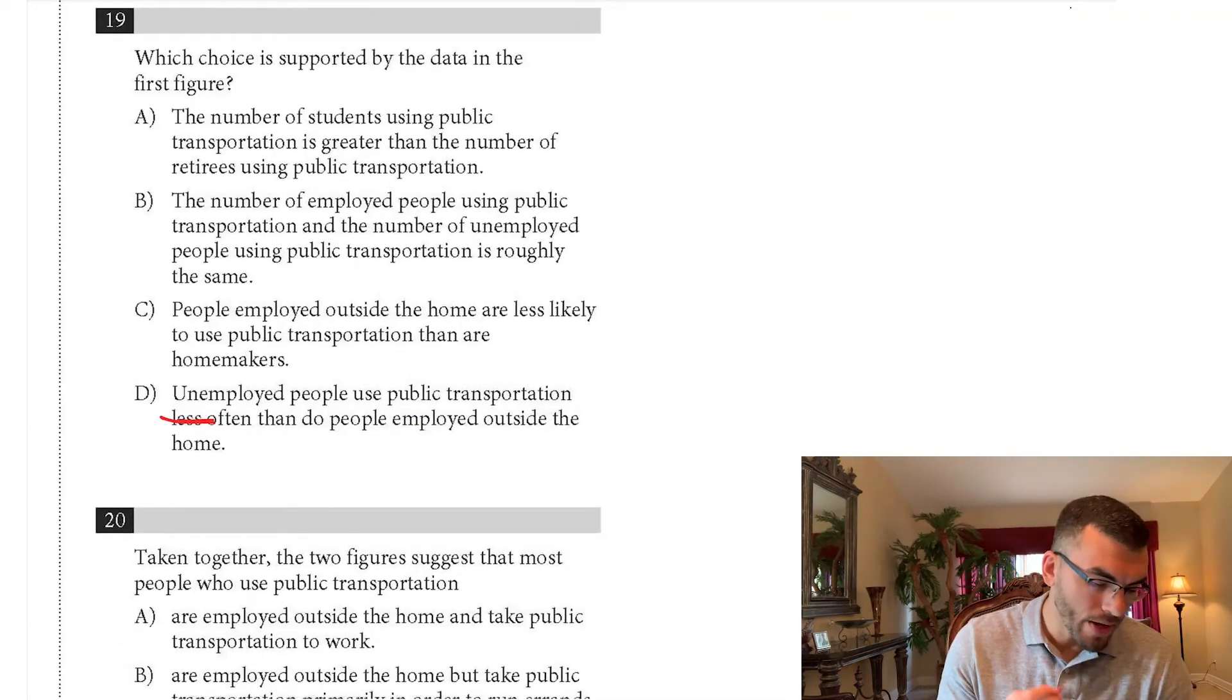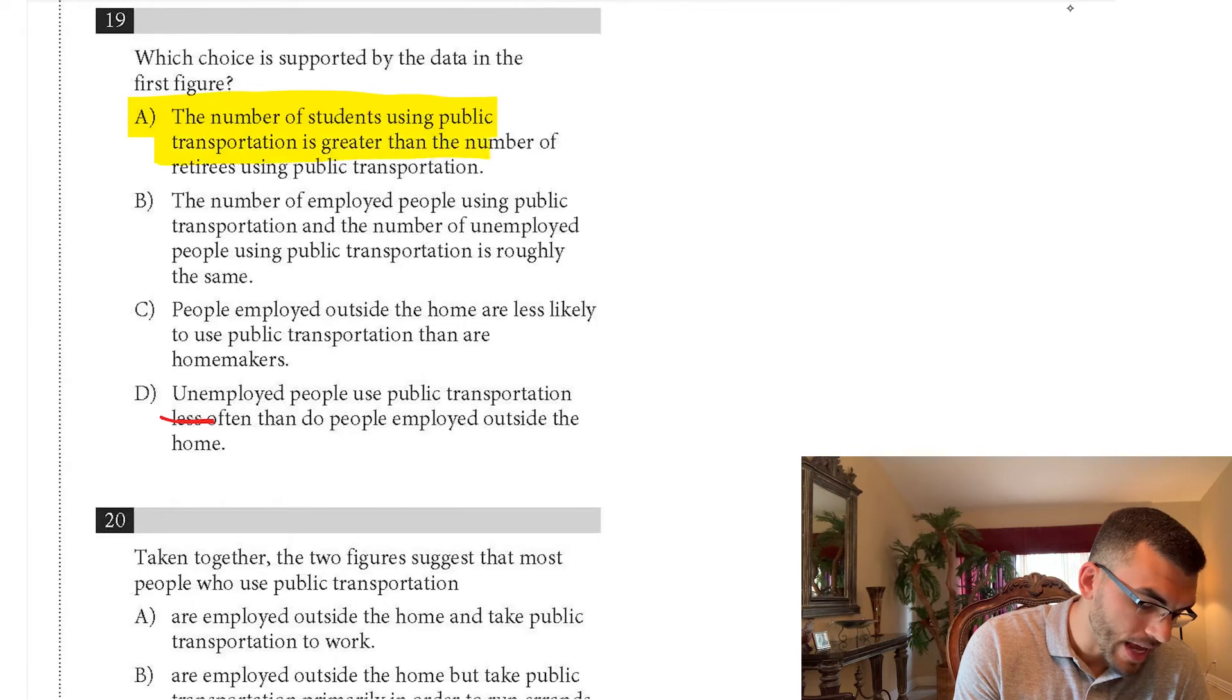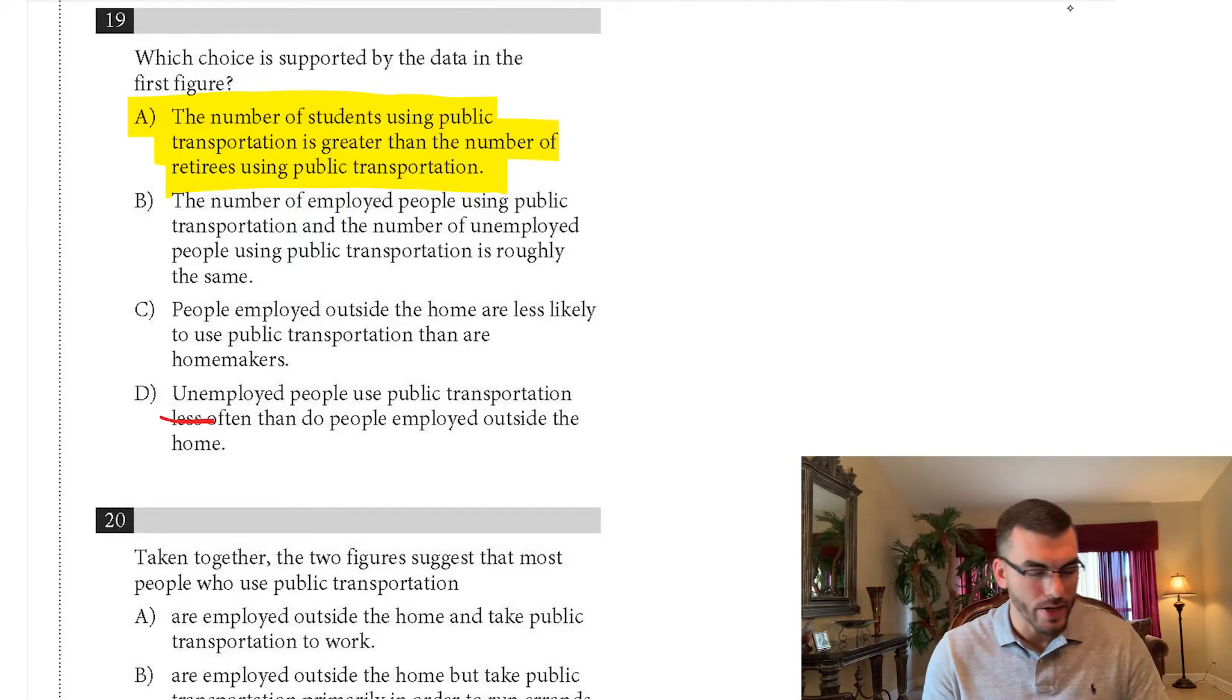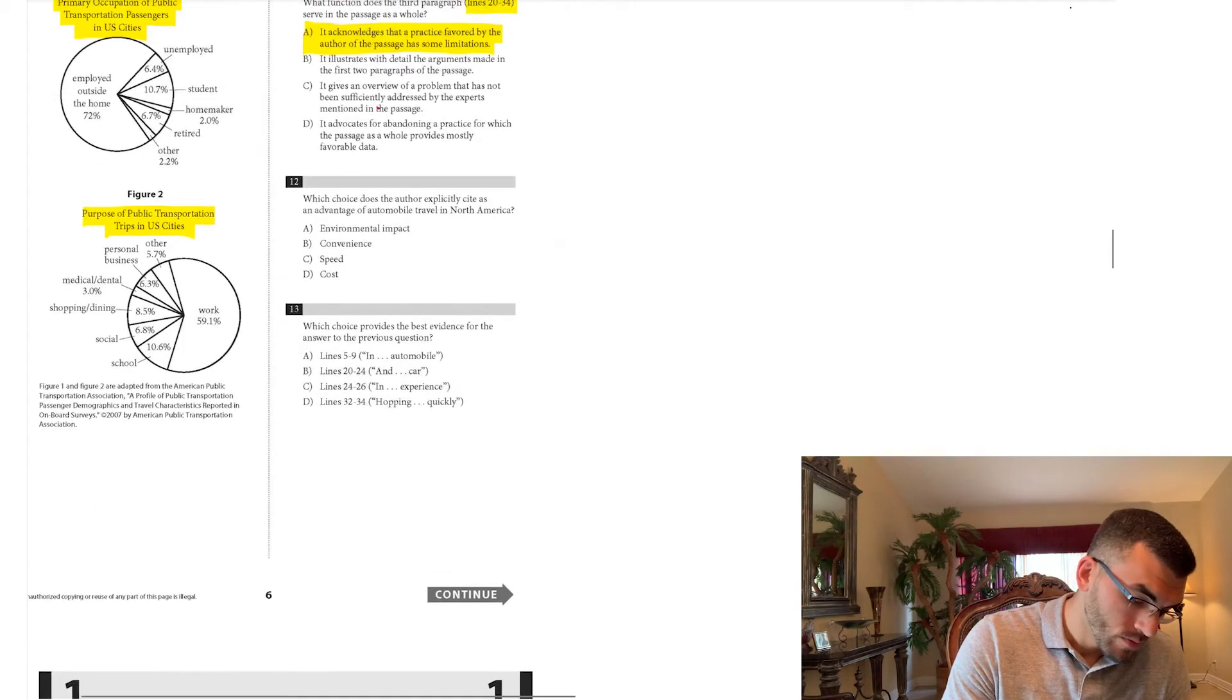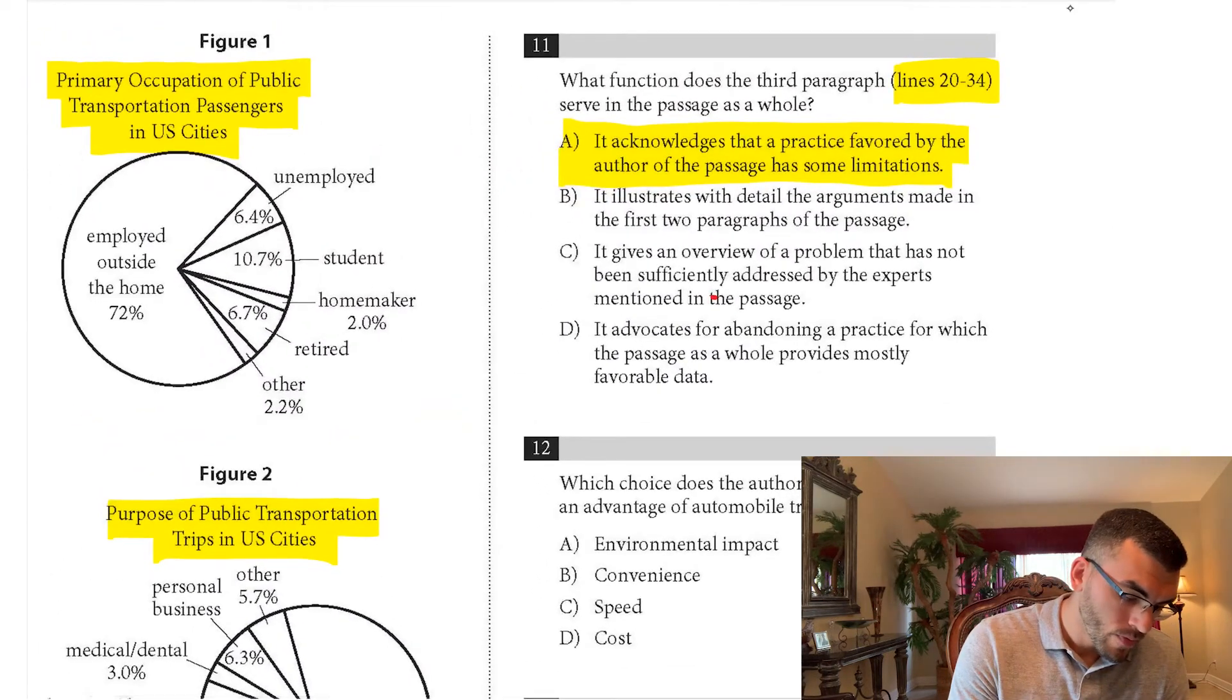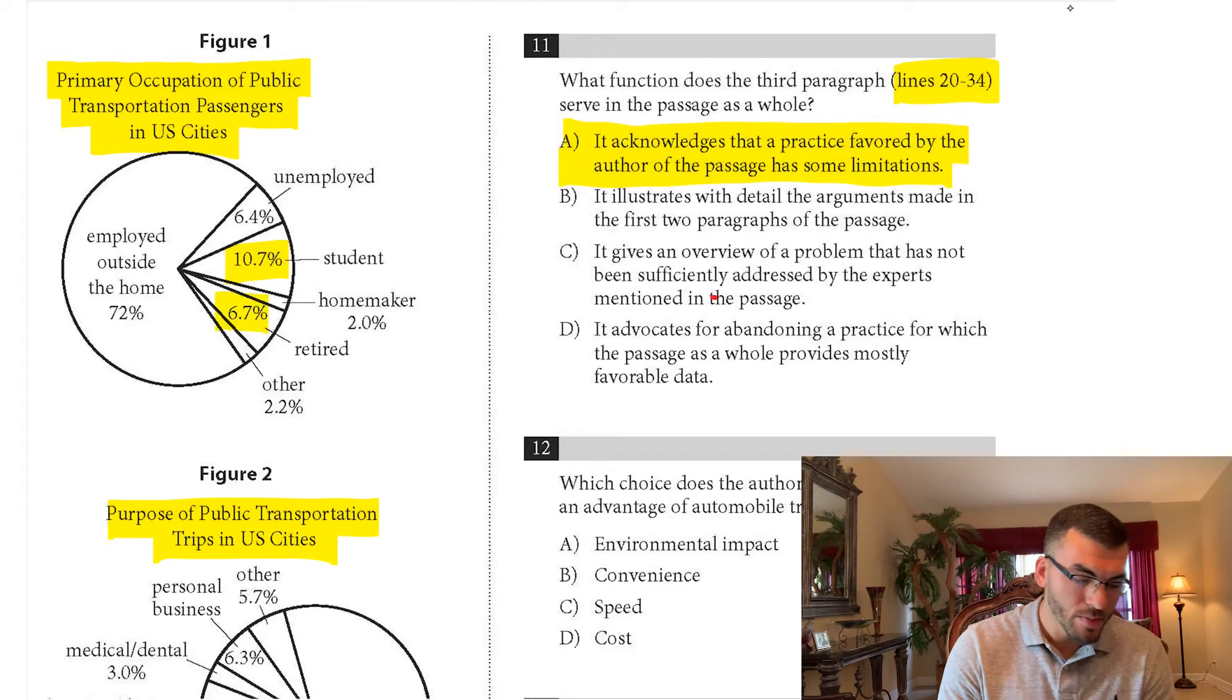So which choice is supported by the data in the first figure? The correct answer is A. The number of students using public transportation is greater than retirees. So how many students are taking public transportation? 10.7%. How many retirees are taking public transportation? 6.7%.